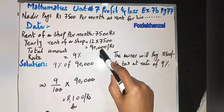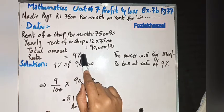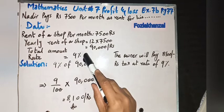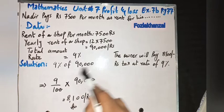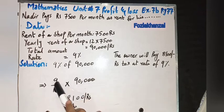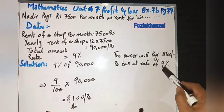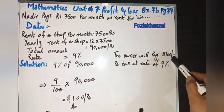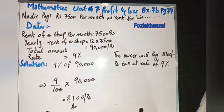On this amount, the owner will pay the tax at the rate of 9%. According to the rate, the total amount is 90,000 rupees. So 9% of 90,000 rupees means 9 upon 100 multiply by 90,000 rupees, which equals 8,100 rupees. The owner will pay 8,100 rupees tax at the rate of 9%.